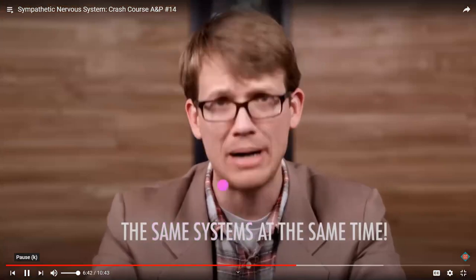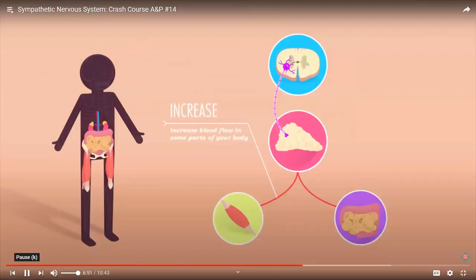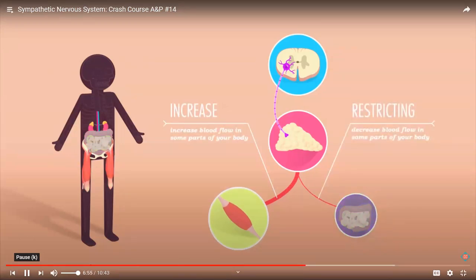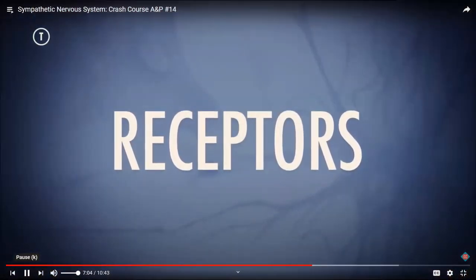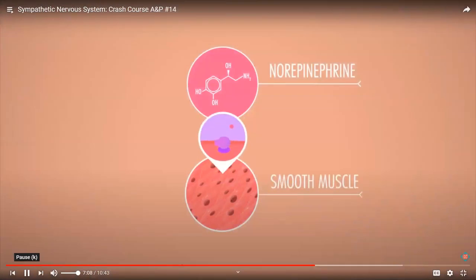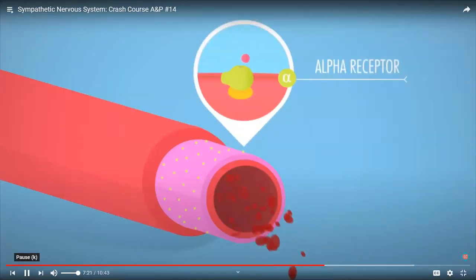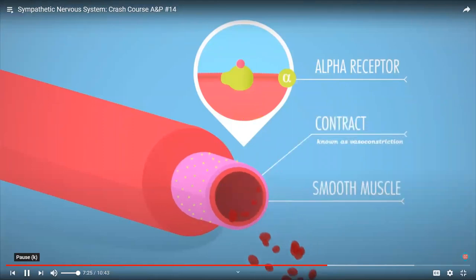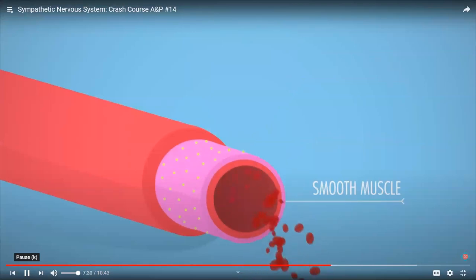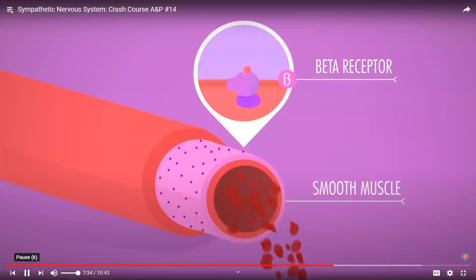Norepinephrine works by both stimulating and inhibiting systems in your body simultaneously. In the burning-house scenario, the norepinephrine your system releases increases blood flow to your leg muscles while restricting blood flow where it's not urgently needed, like your guts. How can the same chemical cause opposite responses? It depends on the particular kind of receptors the effector has. On smooth muscle cells controlling some blood vessels there are alpha receptors — when norepinephrine or epinephrine bind to alpha receptors, they cause those smooth muscle cells to contract, restricting blood flow.